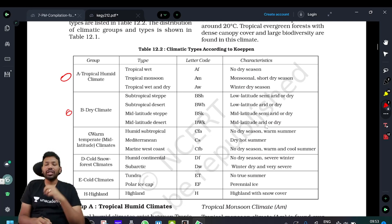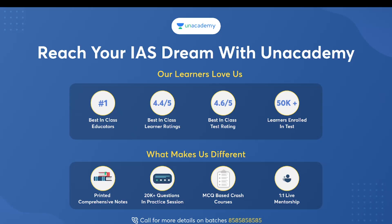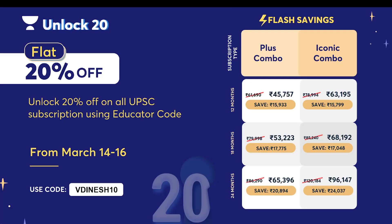We will also discuss an announcement about a completely free UPSC and academic application. Reach your highest dream with this academy. Because you are best in class among 50,000 learners. You are testers, so your comparison is easy. There are 20,000 questions, All India ranking, and one-to-one mentorship. And in Unlock 20, if you join the test series...